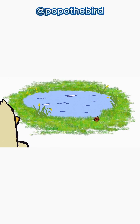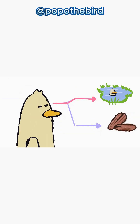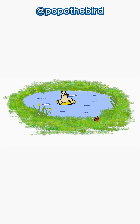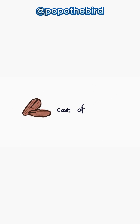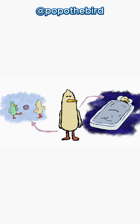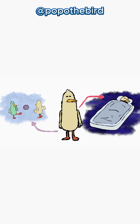Another day, another choice. Duck sees yummy seeds but also a pond — looks fun for a swim. Duck thinks swim is more fun right now, so duck chooses swim. Very nice! But duck does not eat the seeds. What duck gives up for the swim — eating seeds — that is the opportunity cost of swimming.